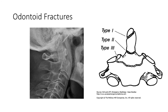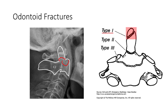There are three types of odontoid fractures, which are best seen on the lateral view. There may be an anterior tilt of the odontoid, and pre-vertebral soft tissue swelling may be the only sign of a fracture, with the fracture line potentially better seen on CT. Type 1 is a fracture through the superior tip of the odontoid. Type 2 is a fracture through the base of the odontoid. Type 3 is a fracture through the base of the odontoid onto the body of the axis.